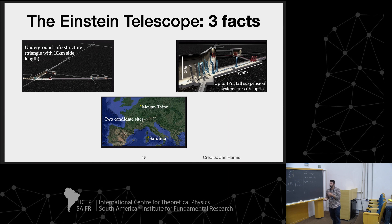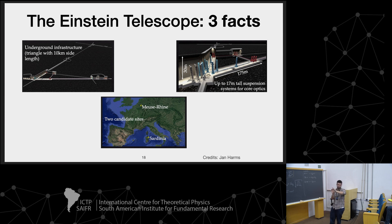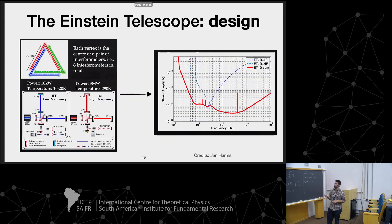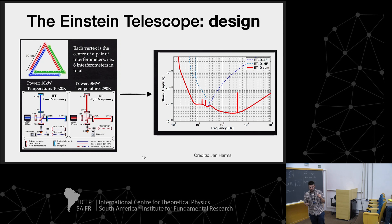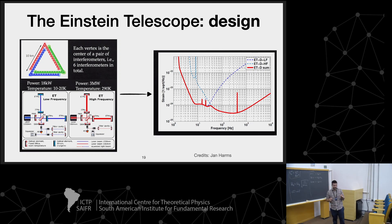There are two candidate sites: one in Sardinia in Italy, and the other in the region between the Netherlands, Belgium, and Germany. The detector is made up of three interferometers, but actually it is a total of six interferometers, because the Einstein Telescope will be built with the so-called xylophone design.